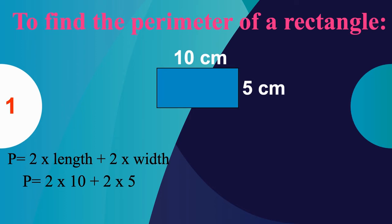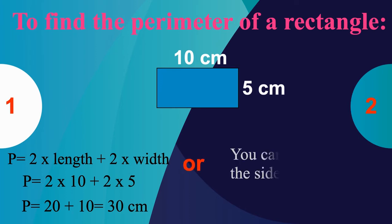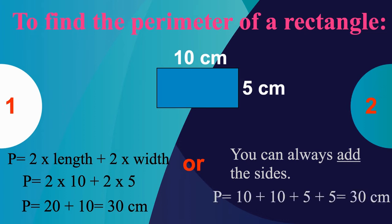Using order of operations, we multiply first: 2 × 10 gives me 20, and 2 × 5 gives me 10. So 20 + 10 = 30 centimeters — the perimeter of this shape is 30 centimeters. Method two: just add up all the sides — 10 + 10 + 5 + 5 = 30 centimeters.